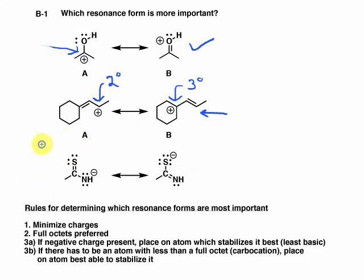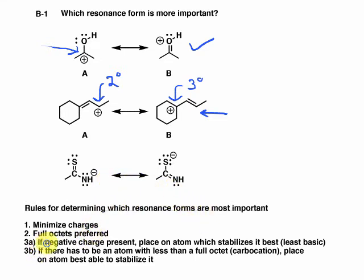Let's look at the final set of resonance forms. In terms of charges, both have a negative charge — one on nitrogen, one on sulfur — but no difference in the number of charges. Is there any atom with less than a full octet? Sulfur has 8, nitrogen also has 8, and carbon in all cases has 8, so there's no differentiation on that point. So we consider the negative charge: here it's on nitrogen, and here it's on sulfur.